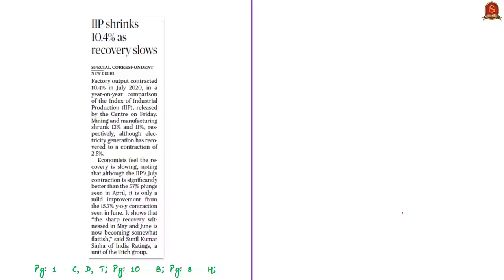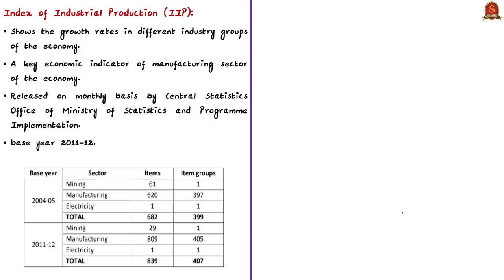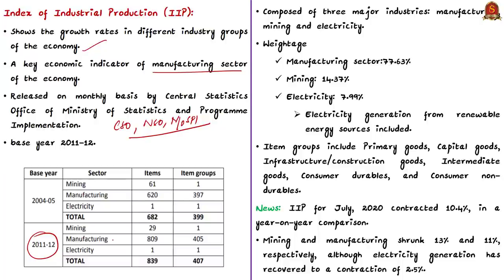The next news article talks about the Index of Industrial Production (IIP) for July 2020. IIP shows the growth rates in different industry groups of the economy and is a key economic indicator of the manufacturing sector. It is released on a monthly basis by the CSO under the National Statistical Office of the Ministry of Statistics and Programme Implementation. The base year for calculation is 2011-12, and the index is broadly composed of three major sectors: manufacturing, mining, and electricity.